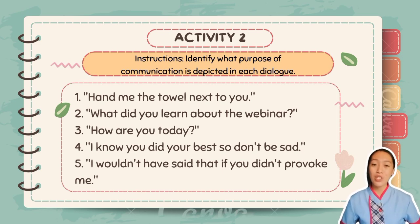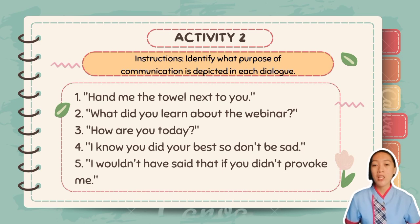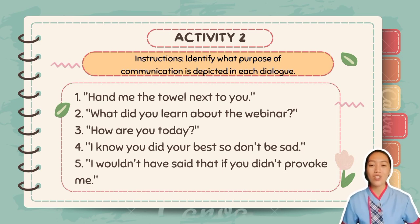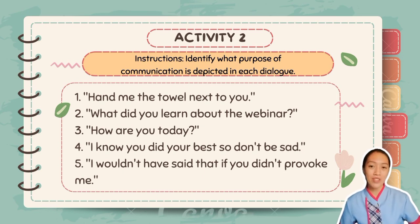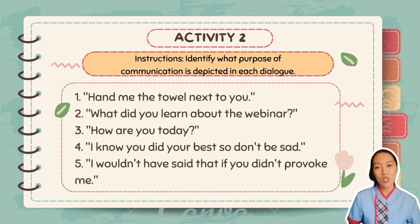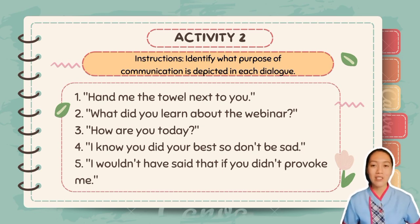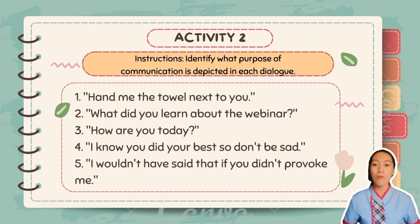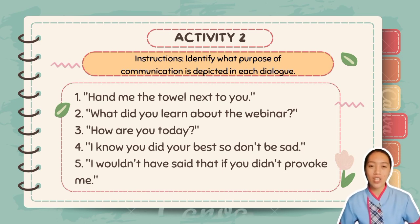Number two: 'What did you learn about the webinar?' The speaker is trying to gather some information by asking the person she's talking to. Third: 'How are you today?' Here the speaker is just trying to start a conversation or simply to socialize. Fourth: 'I know you did your best, so don't be sad.' The speaker is trying to motivate the person she's talking to.